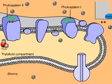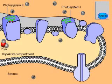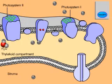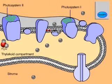Meanwhile, energized electrons from photosystem 2 are passed through another electron transport chain. Their energy is used to pump hydrogen ions from the stroma into the thylakoid compartment, creating a concentration gradient.